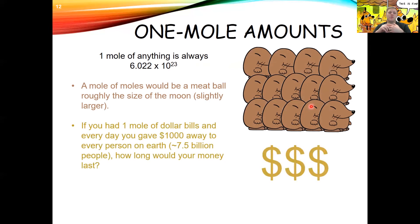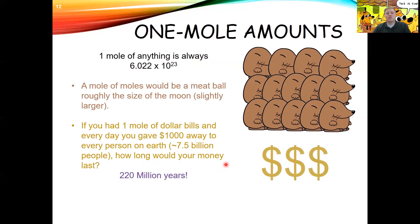If you had one mole of dollar bills — 6.022 × 10²³ dollar bills — and every day you gave $1,000 to every person on Earth (about 7.5 billion people), your money would last 220 million years. If you add up all the currency of every nation that has ever existed on Earth, you still don't come up with one mole of currency.